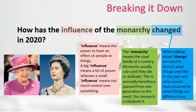So now we're going to break down the question together: how has the influence of the monarchy changed in 2020? The term influence means the power to have an effect on people or things. A big influence means a lot of power and a bigger impact on something, whereas a smaller influence means not much control over something or people.